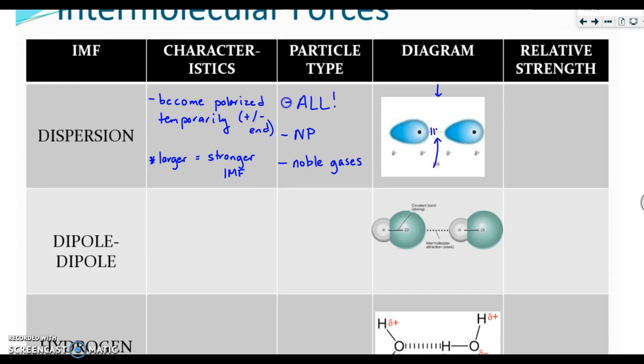Usually for IMFs we're going to use dashed lines like this to indicate that an IMF is present between the molecules or the atoms. Because these are temporary and they're not permanent dipoles, the relative strength of something with dispersion forces is the weakest. So these are going to be the weakest overall.